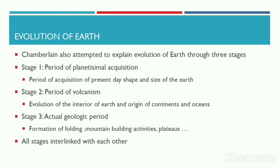Chamberlain also attempted to explain the evolution of Earth and its components through three specific stages. The first stage was the period of planetesimal acquisition — the period of acquisition of the present-day shape and size of the Earth. The second stage was the period of volcanism, in which the evolution of the interior of the Earth and the origin of continents and oceans occurred.